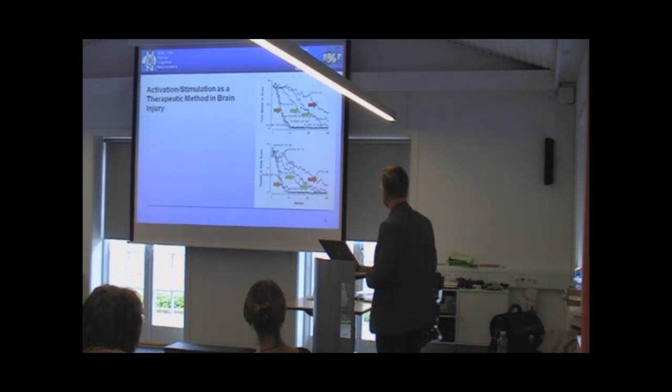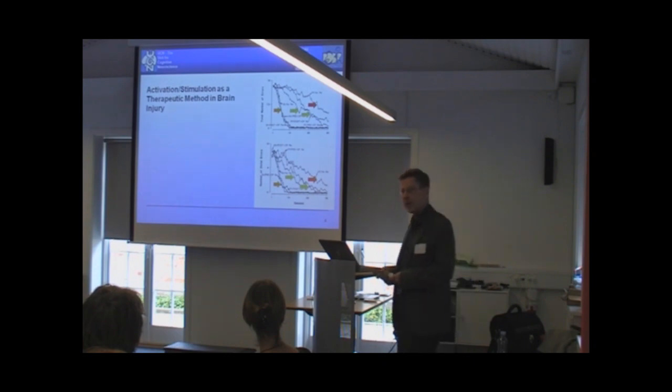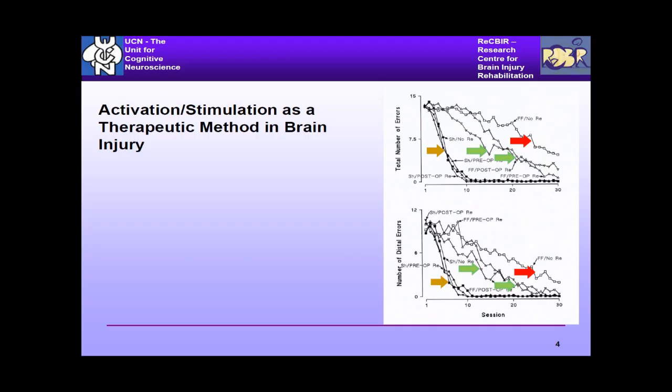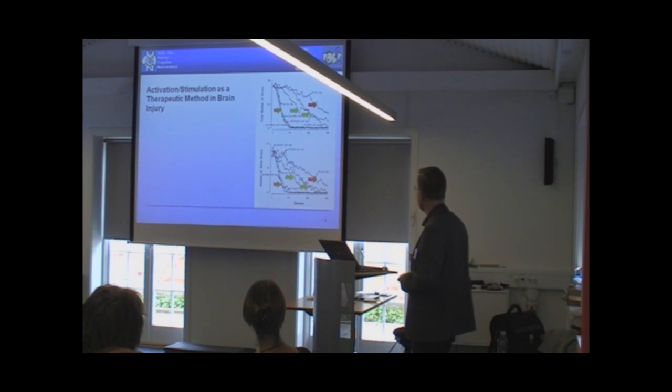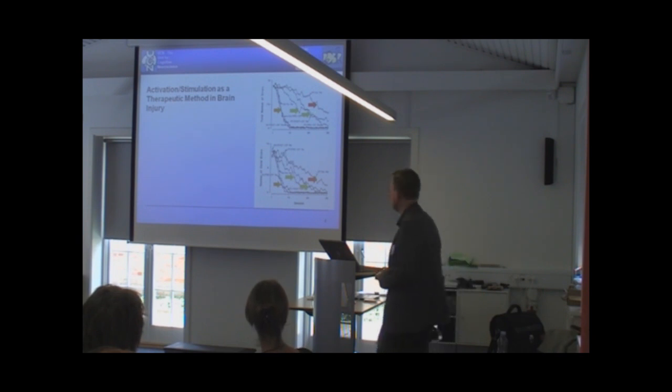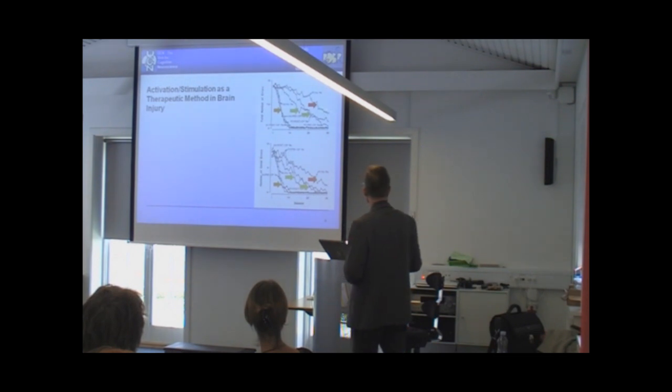However, the interesting part here are those two groups marked with the green arrows. Those two groups have injury completely identical with respect to both the magnitude and the location in the brain to the red group up here. But as you can see, they acquire the task much faster. They manage to come within actually rather narrow vicinity of the controls within that month. Had we continued, they would probably, within a relatively few days, be at the level of the controls. And they are, both groups, significantly improved relative to that lesioned group up here.